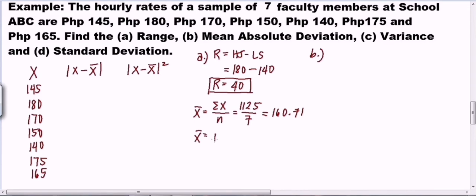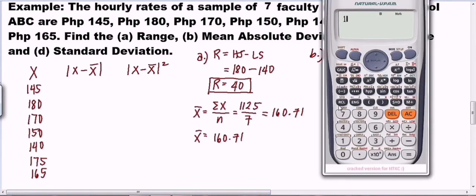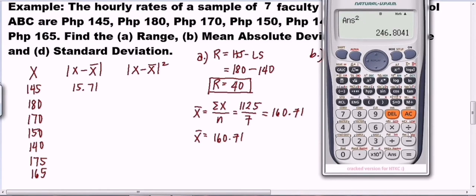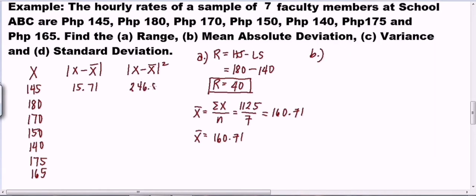Now that we have the mean, we can compute the table values. For the first X value, 145: 145 minus 160.71 equals negative 15.71. We take the absolute value, so we write 15.71 in the second column. Then squaring that gives us 246.80 for the third column.